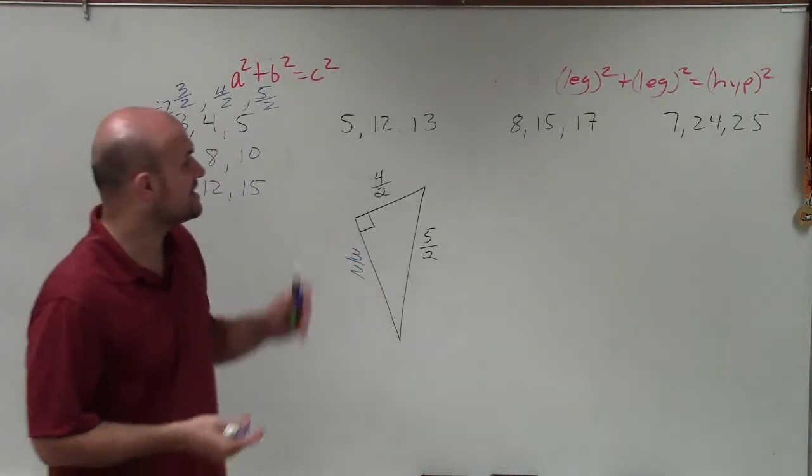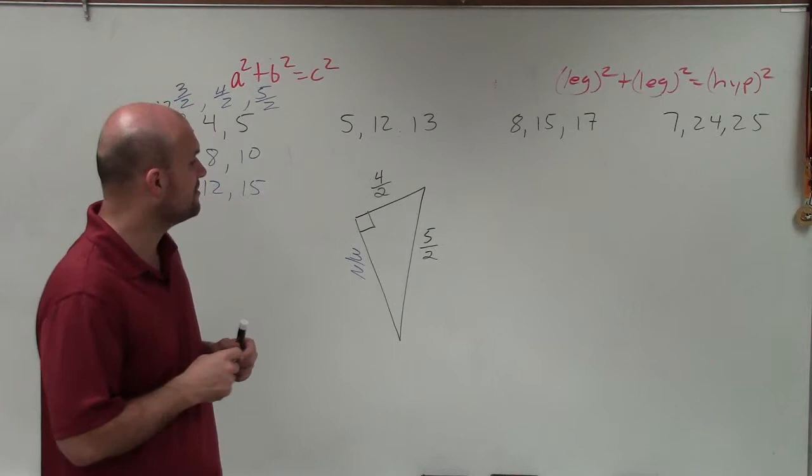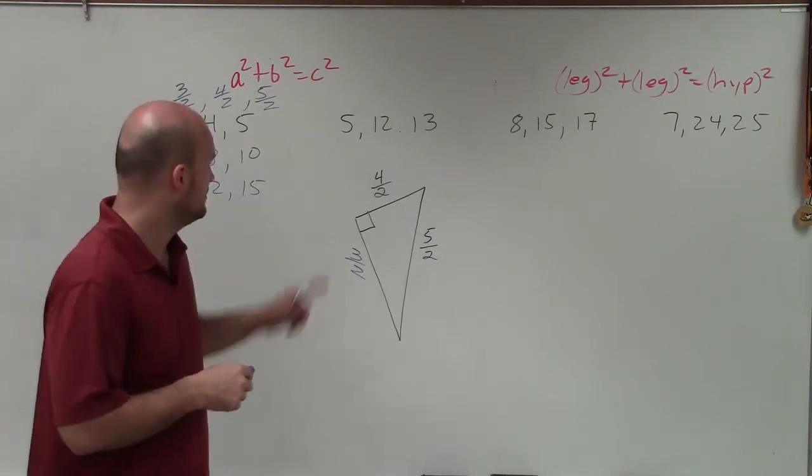So there you go, ladies and gentlemen. That is how you use Pythagorean triples to determine your missing leg of a triangle. Thanks.